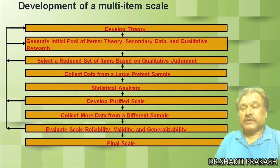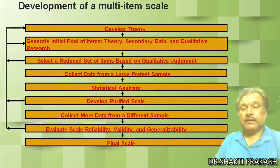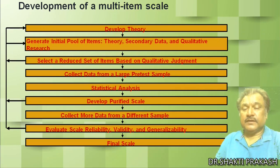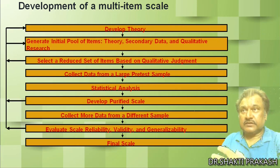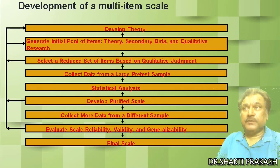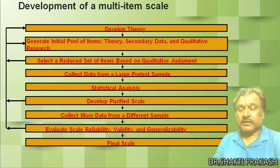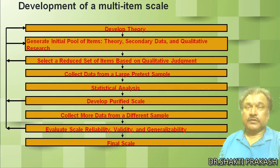We select a reduced set of items based on qualitative judgment. Then we collect data from a large pre-test sample and go for statistical analysis to develop a purified scale. Then we collect more data from different samples, evaluate scale validity and generalization, and then go for the final scale. This is the process of constructing your research-based questionnaire. You will decide your final scales, make analysis for the reliability of the scale and validity of your research questionnaires, and then the final scales will be decided.